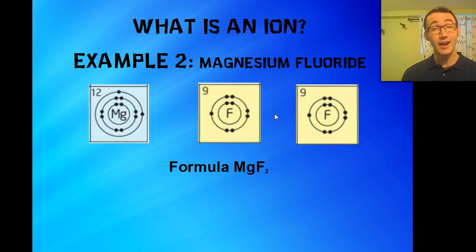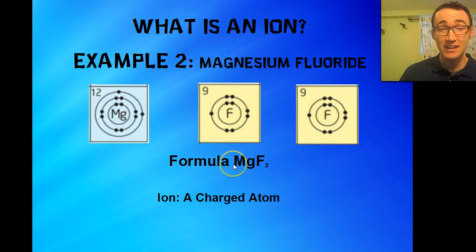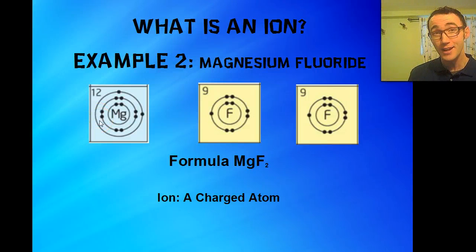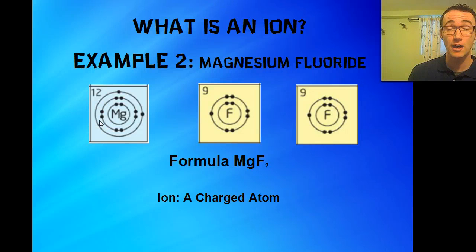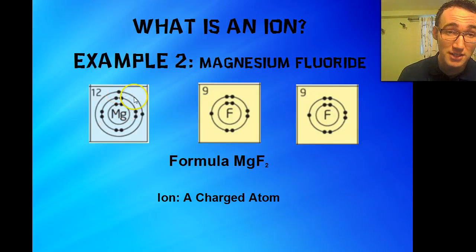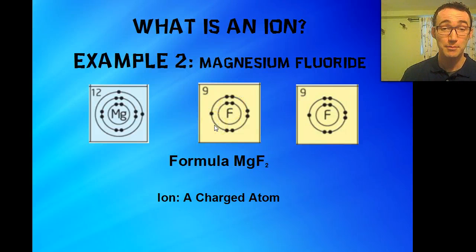We're talking about ionic compounds, so we need to talk about the word ion. What is an ion? An ion is a charged atom. When these elements start off by themselves, they're not charged — they're neutral, meaning they have the same number of protons as electrons. But when they come together and react, they're going to be charged, because magnesium loses two electrons so it becomes positive, and fluorine gains an electron so it becomes negative.